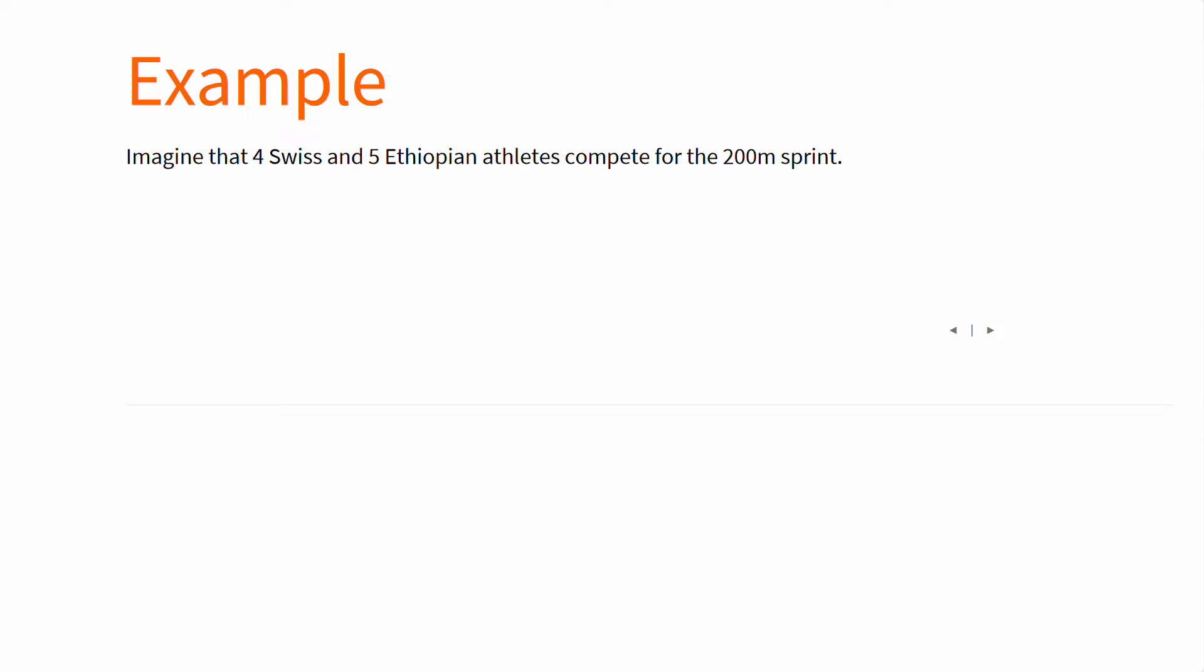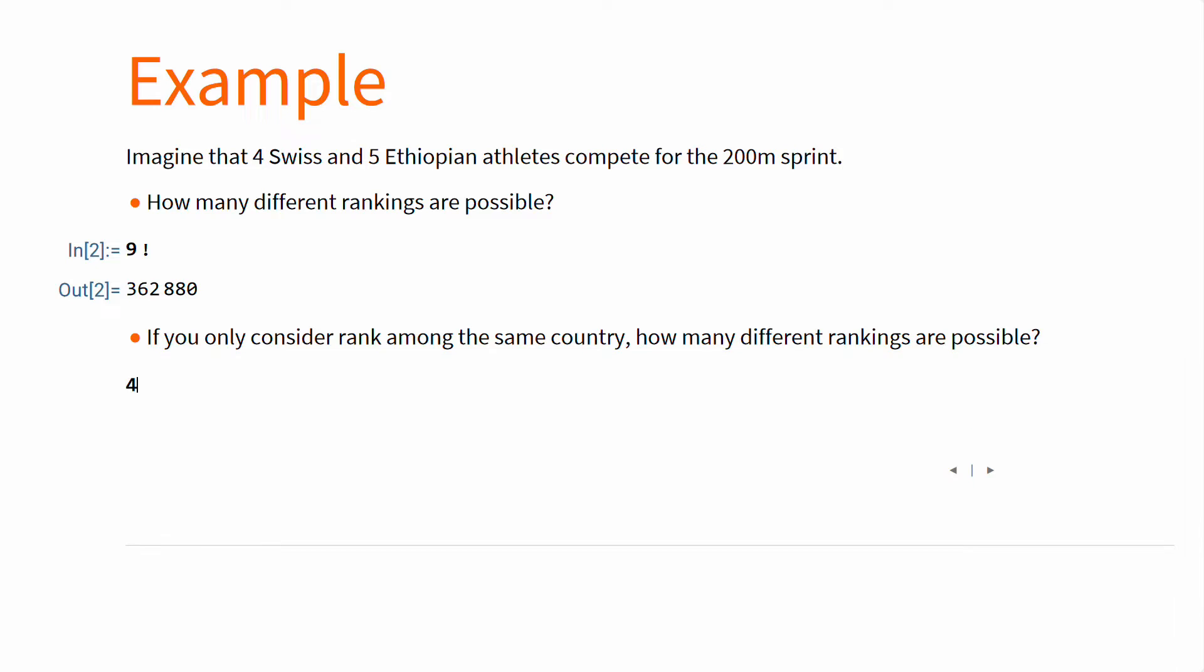So let's take an example. Imagine four Swiss and five Ethiopian athletes competing. If you rank them all, then you choose 9, and then 8, and then 7, and so on until 1, so 9 factorial. If separated into two groups, then there are 4 factorial and 5 factorial, multiplied because there are two different events, so simultaneous.